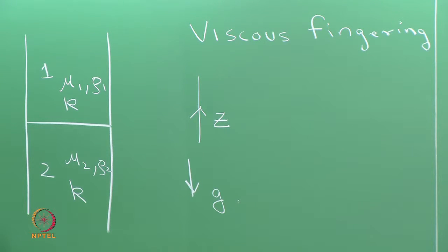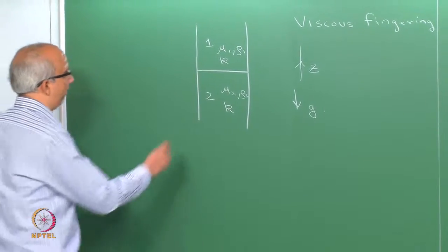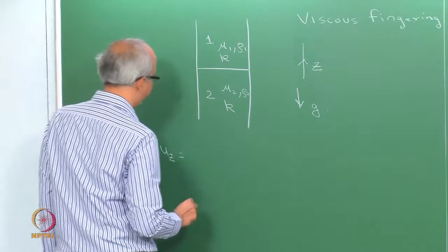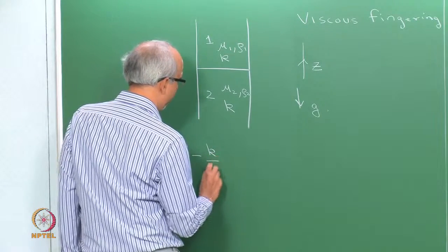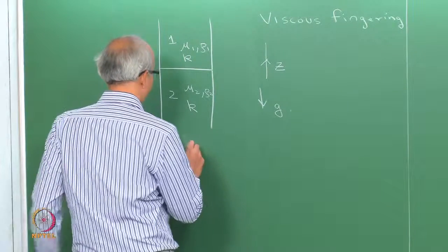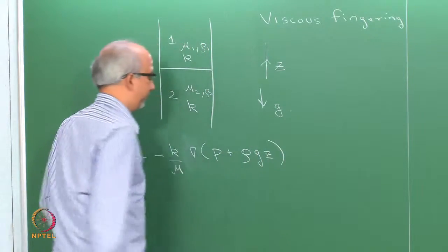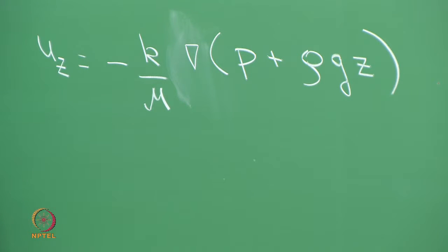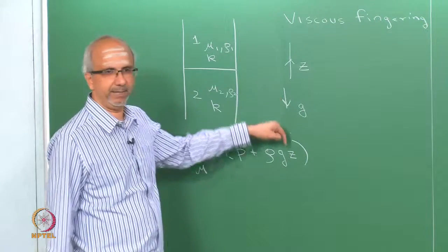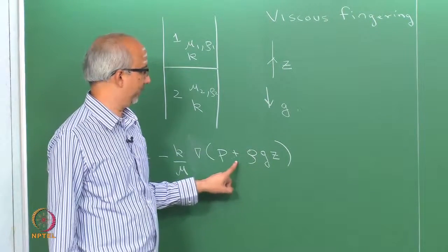We are going to use Darcy's law, which tells us that the z-component of velocity u_z is given by minus k divided by μ times the gradient of p plus ρgz. Since g is acting in the negative z-direction, this becomes plus ρgz. Going back to the Navier-Stokes equation, I can group these two terms and write the velocity component u_z as a gradient of a potential φ, where φ equals minus k/μ times (p + ρgz).